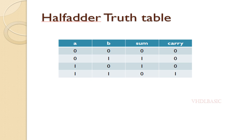This is the truth table for the half adder. There are two outputs. With respect to the two inputs, we need to implement these two outputs. If A equals 0, B is directly assigned to sum. If A equals 1, B_bar is assigned to sum. If A equals 0, carry equals 0. If A equals 1, carry equals B.